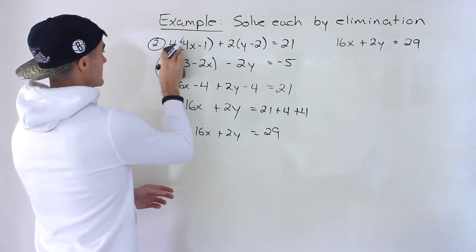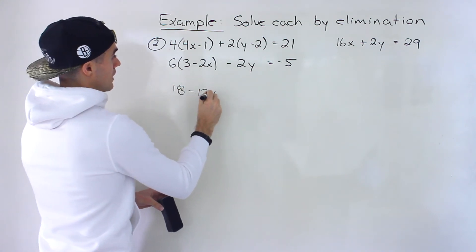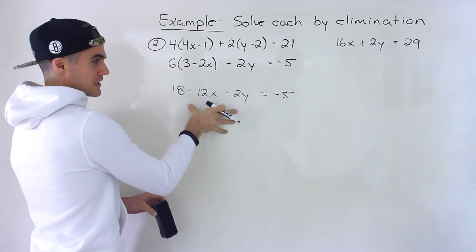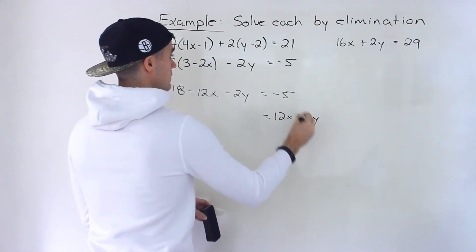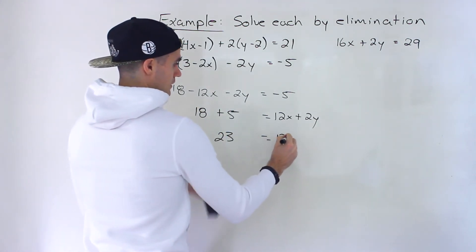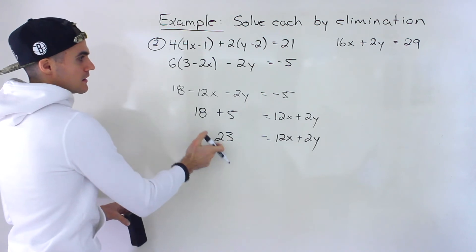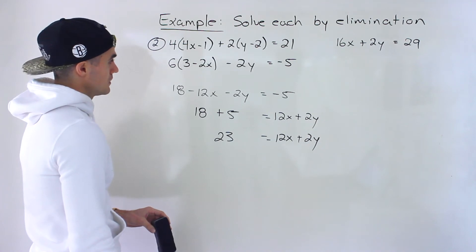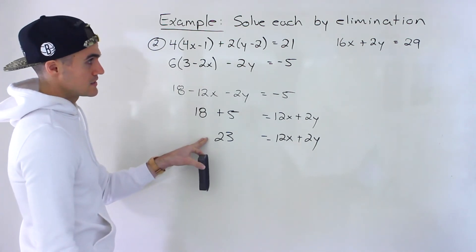Now let's figure out what that second equation simplifies to. So we have 18 minus 12x minus 2y is equal to negative 5. Both of these are negative here — I'm going to bring them over just to make them positive. So we'll have 12x plus 2y, then the negative 5 I'll bring over, so we'll have 18 plus 5 — and again we end up with an odd number. Would have been nice to divide everything by 2, but this is odd. So this second equation simplifies to 12x plus 2y equals 23.